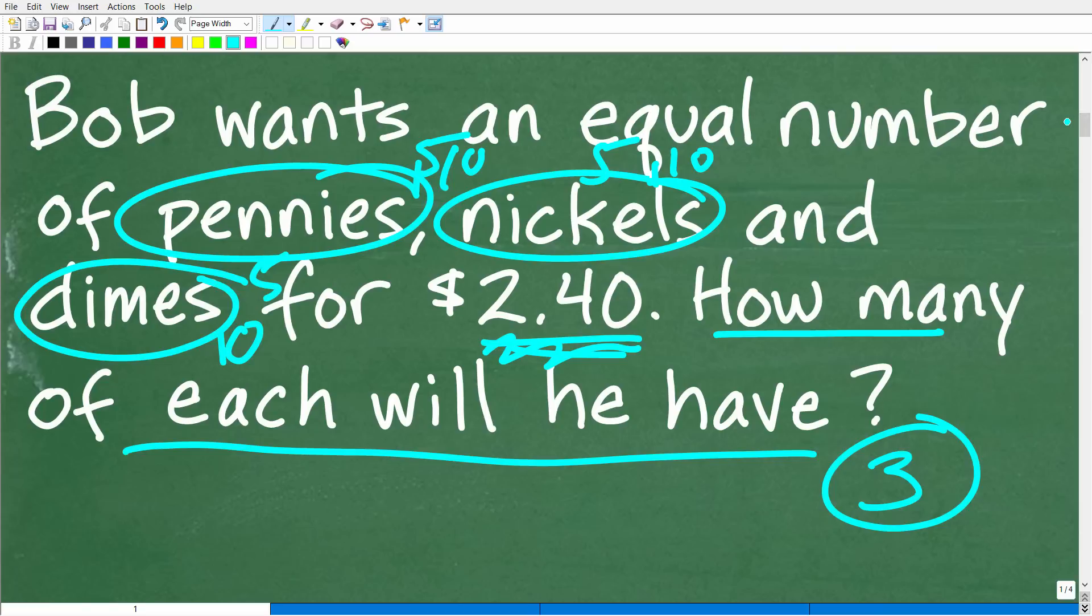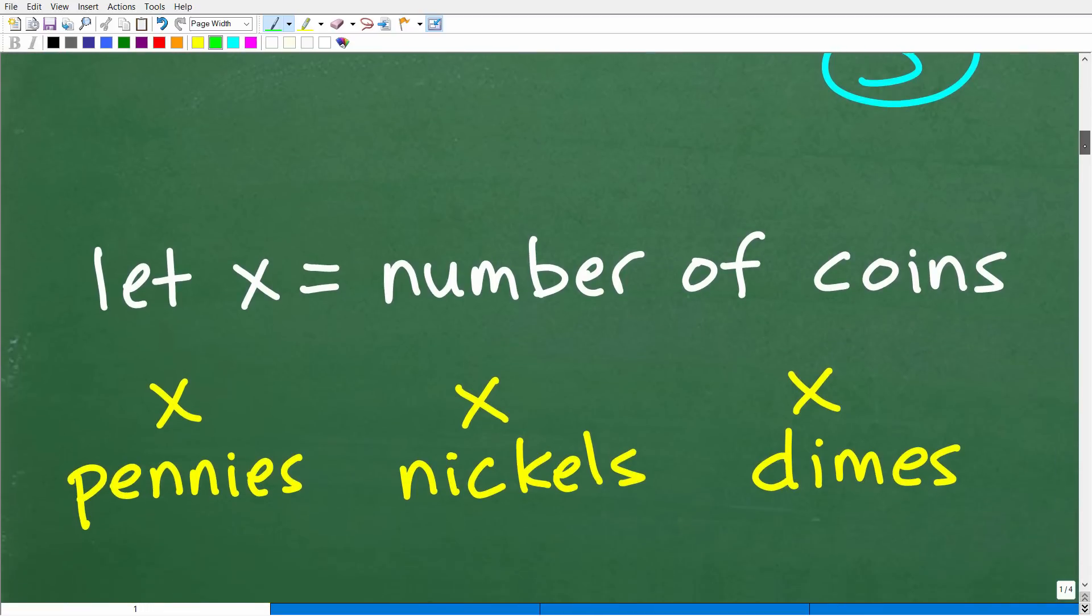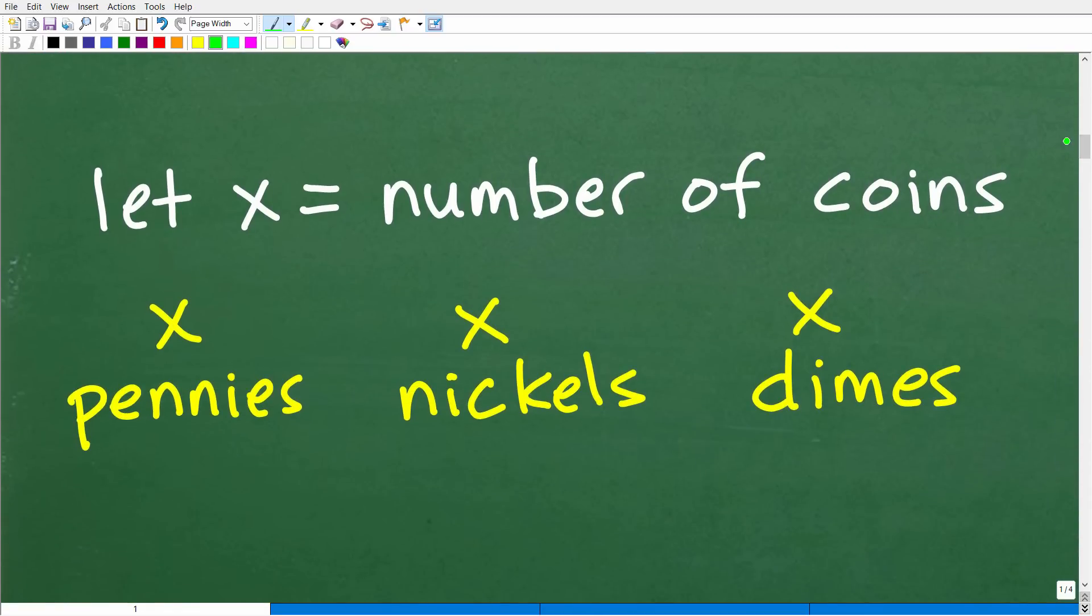But we're going to take a look at how to use algebra. And we have to kind of notice here that the question involves an unknown value. How many? Okay. Well, how many what? Well, we don't know. How many is a good indication that we want to use a variable, which means we're going to use algebra.